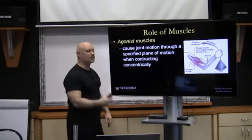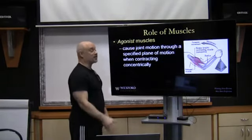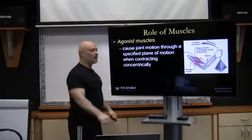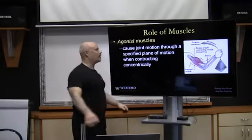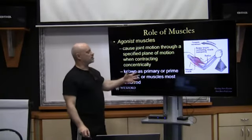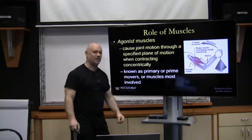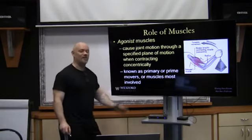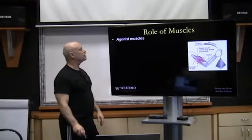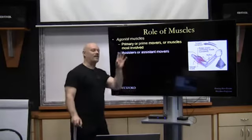Concentric means the muscle is shortening. Whether we're having flexion and extension — which only happen in the sagittal plane — abduction through the frontal plane, or rotation in the transverse plane, we need to look at what muscles are causing that. These are known as the primary or prime movers — muscles most involved in causing a particular movement through a specific plane of motion or across all planes of motion.